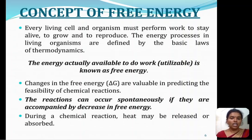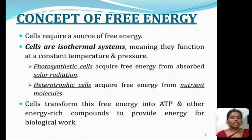Changes in free energy, delta G, are valuable in predicting the feasibility of chemical reactions. Reactions can occur spontaneously if they are accompanied by decreasing free energy, i.e., negative delta G. During a chemical reaction, energy may be released or absorbed. Cells require a source of free energy. Cells are isothermal systems, meaning they function at constant temperature and pressure. Photosynthetic cells acquire free energy from absorbed solar radiation; heterotrophic cells acquire free energy from nutrient molecules. Cells transform this free energy into ATP and other energy-rich compounds to provide energy for biological work.